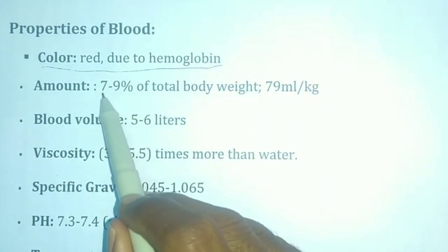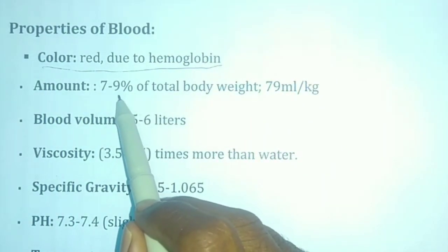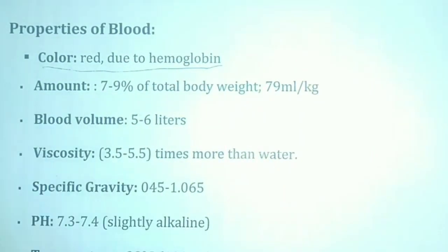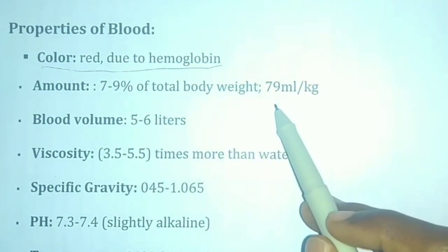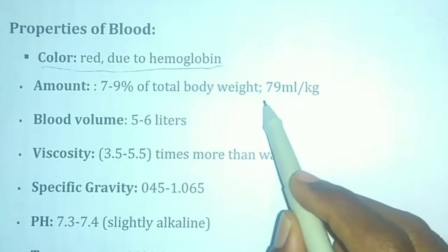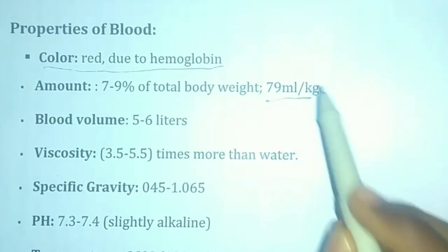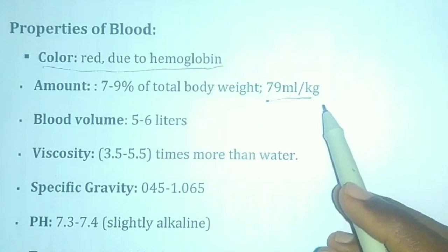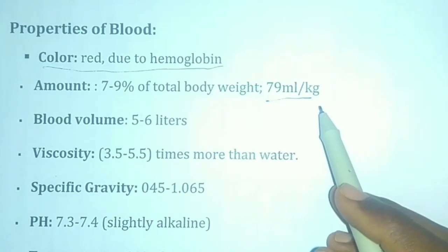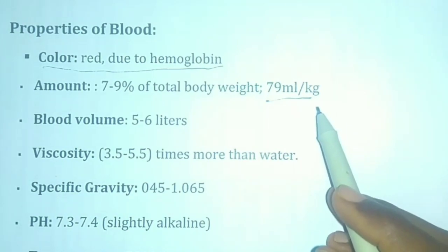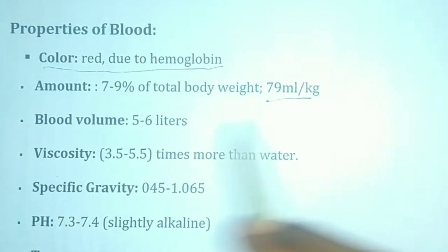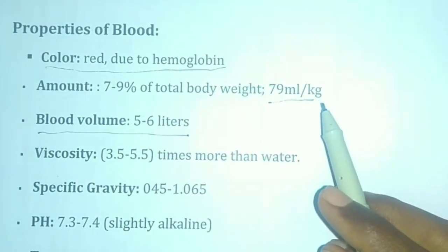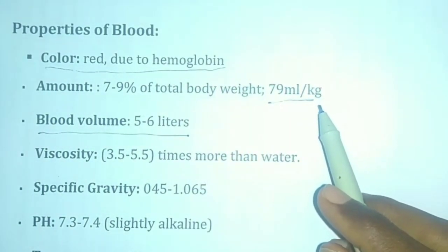We have about 7.9% of total body weight in our blood, and we have about 79 ml per kg body weight in blood.